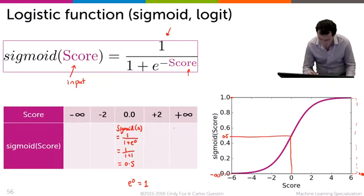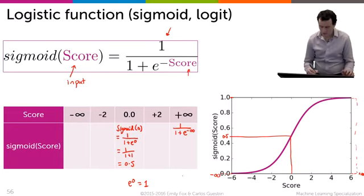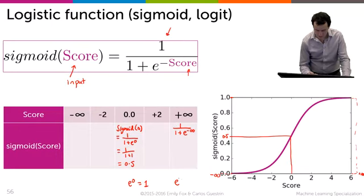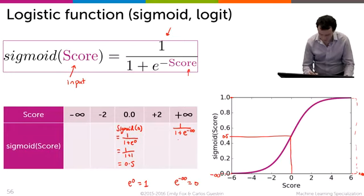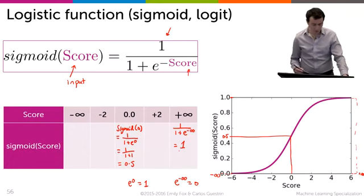So let's see what happens to sigmoid of plus infinity. That's 1 over 1 plus e to the power of minus infinity. And cheat sheet here, e to the minus infinity is equal to 0. And so this thing here directly gives you the output 1.